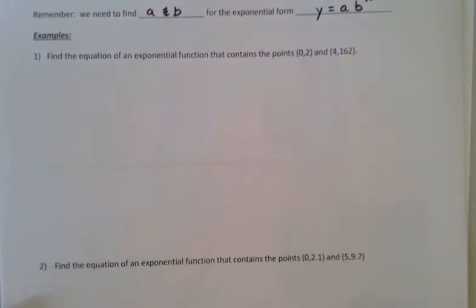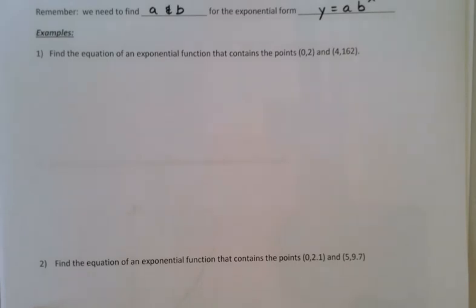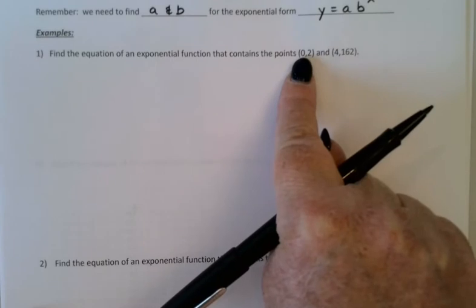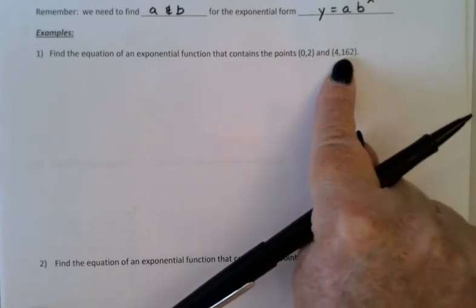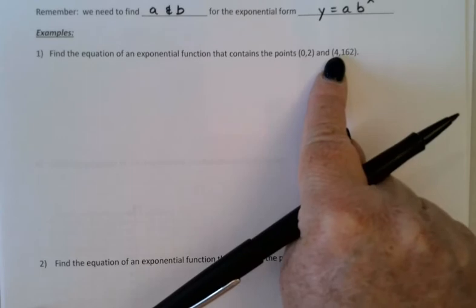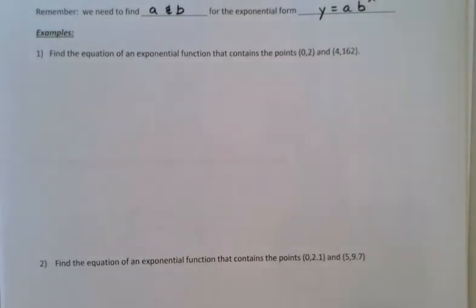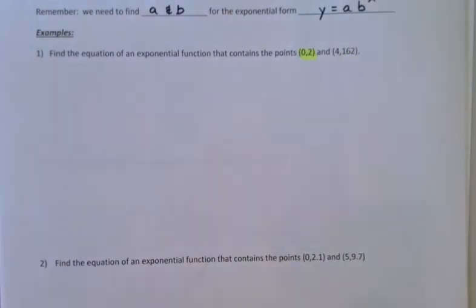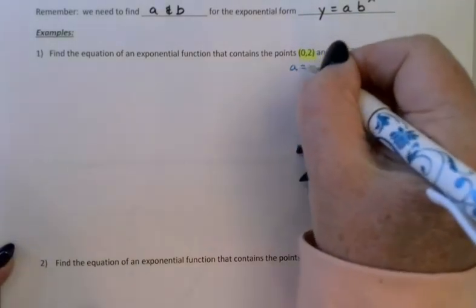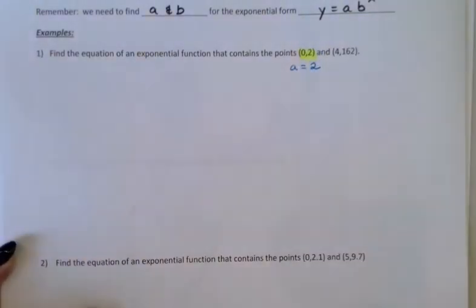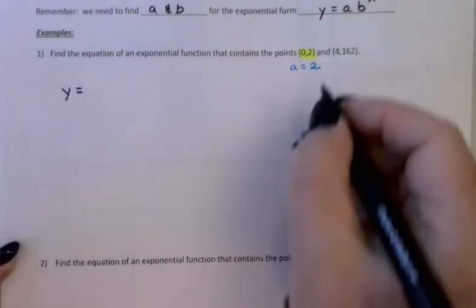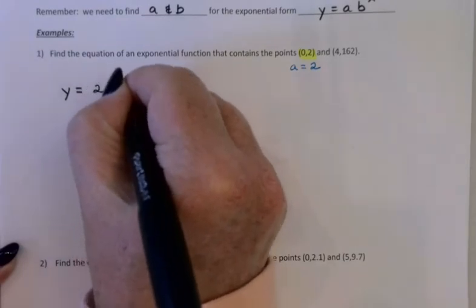Alright, in our first example we're looking for the equation of an exponential function that contains the points (0, 2) and (4, 162). Notice our x value definitely did not increase by 1 here. One piece of good news, we're given the y-intercept, the (0, 2). Since that's the y-intercept, we already know the a value is 2. So I'm going to start by writing my exponential function, y equals 2, b to the x.